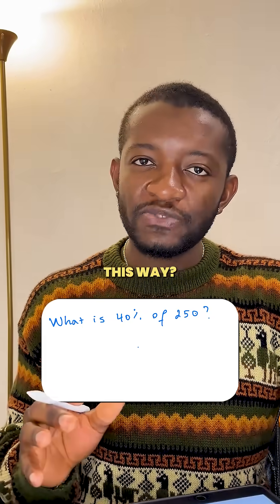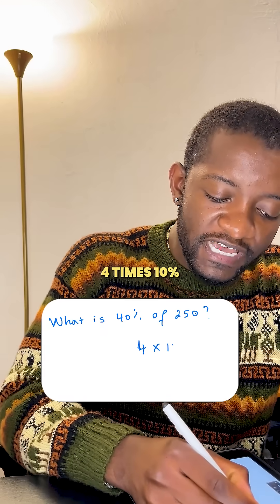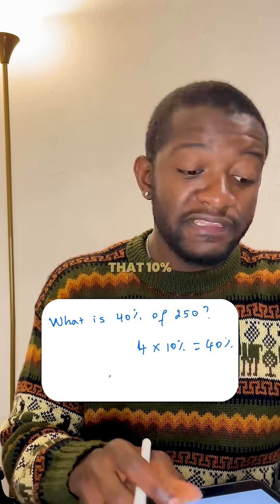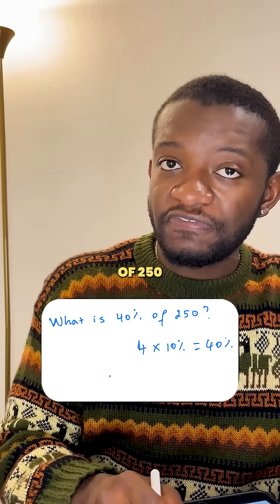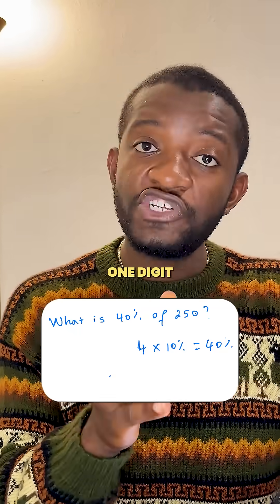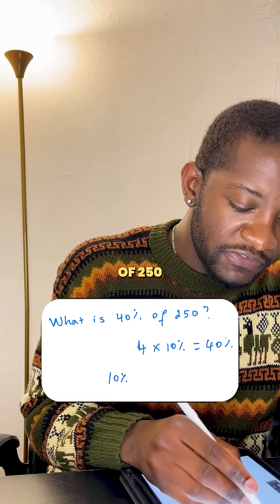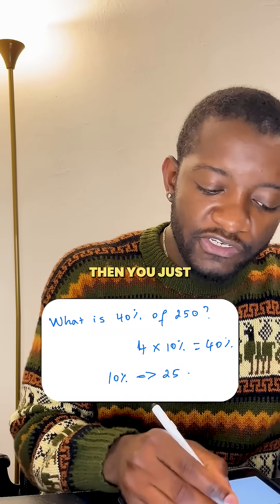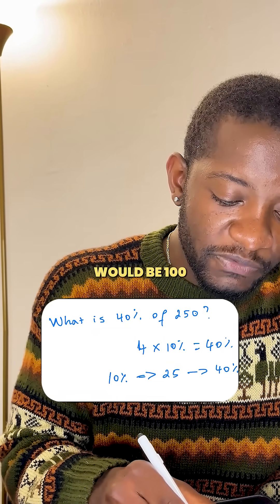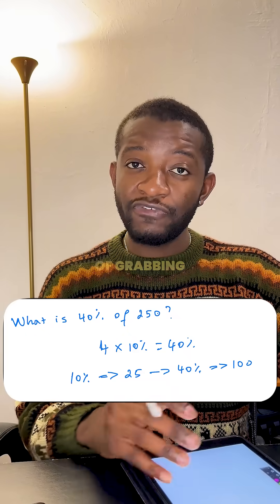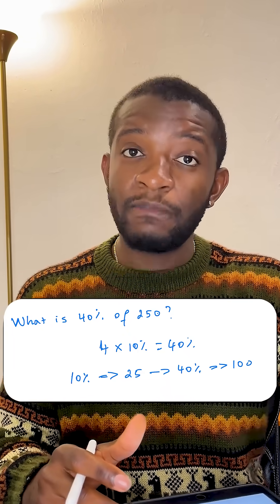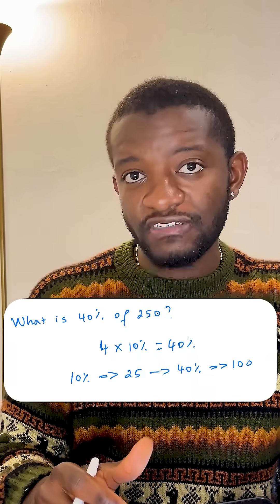What if instead you thought of it this way? You know that 4 times 10% equals 40%, and 10% of 250 is just 25 — you just move the decimal place by one digit. Then you multiply that by 4, so 40% of 250 would be 100. Instead of grabbing your calculator, just think: 10% of 250 is 25, multiply by 4, and you get 100.